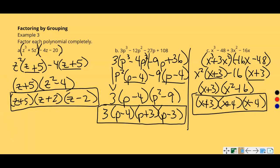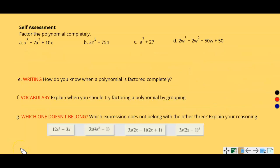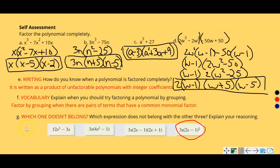That's all for example three. Here's a self-assessment — it's good to practice on your own because it always looks easier when you're watching someone else do it. Take a few minutes, try to factor each of these, and answer the questions. Pause the video, then come back to check if your answers match. If they don't, please reach out so we can talk about where you went wrong.